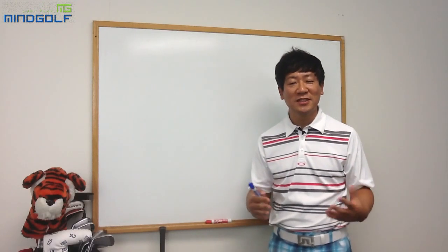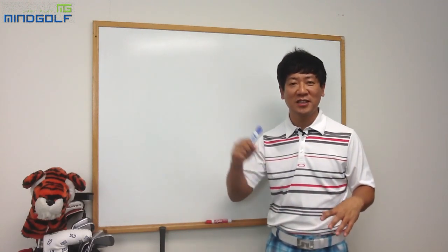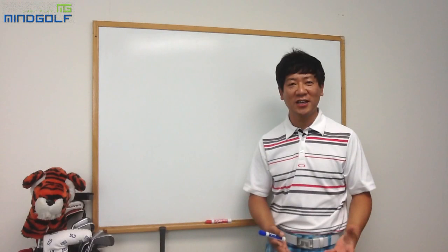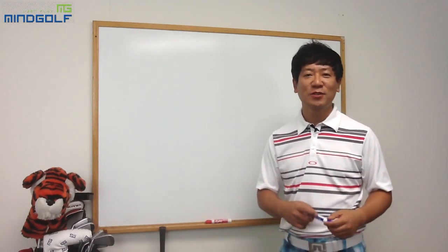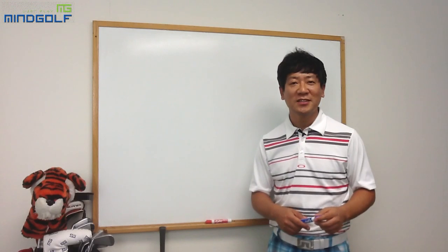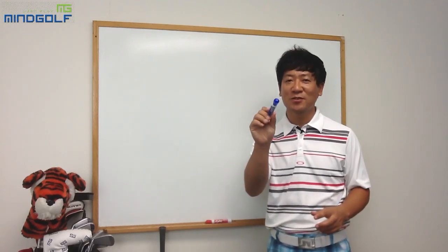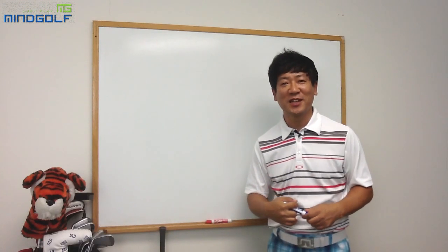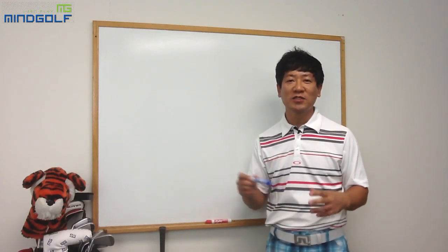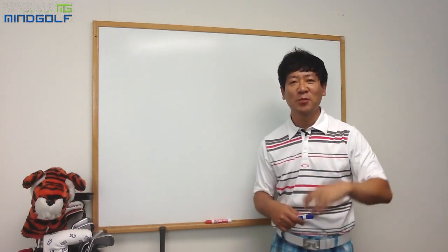우리가 보통 하는 일반적인 운동은 지구에 중력이 없으면 할 수 없는 운동들이 많습니다. 중력은 지구 중앙의 큰 물체로 인해 모든 물건이 땅으로 떨어지게 하는 힘이죠. 만약 친 골프공에 중력이 없다면 한참 날아가겠죠. 우주공간의 무중력 상태에서는 물체가 저항 없이 계속 날아갑니다. 골프도 이러한 포물선 운동을 하게 됩니다. 결국 공을 더 멀리 보내는 힘은 높이 올리는 힘이 강할수록 더 멀리 갈 수 있겠죠.